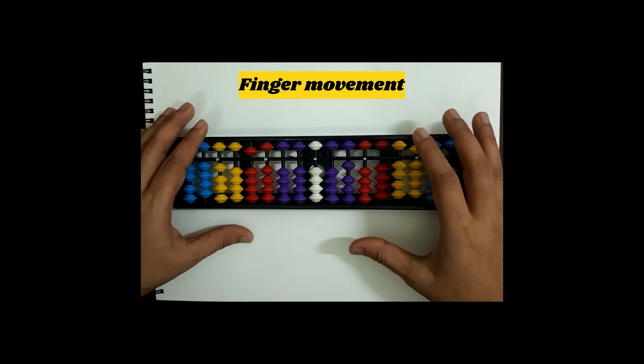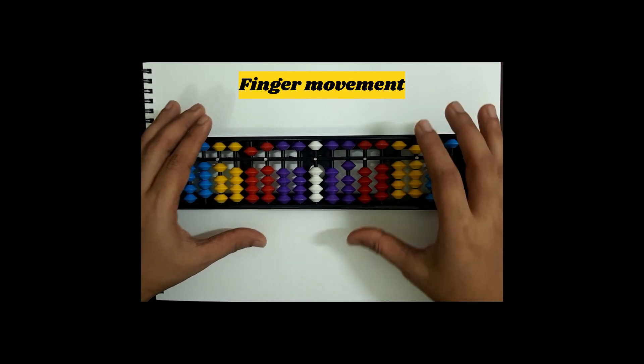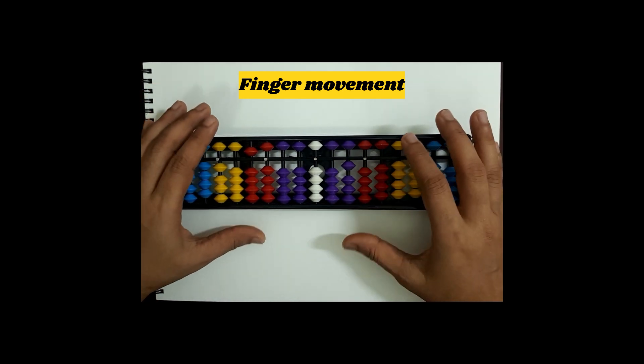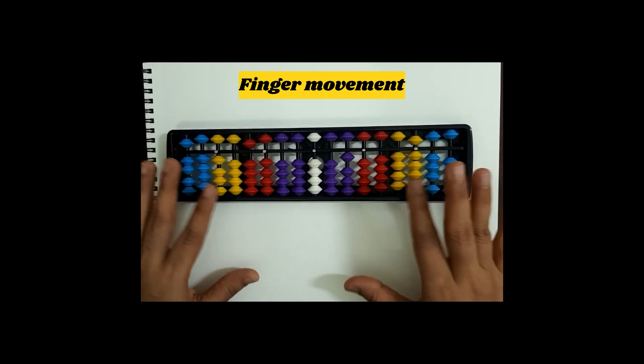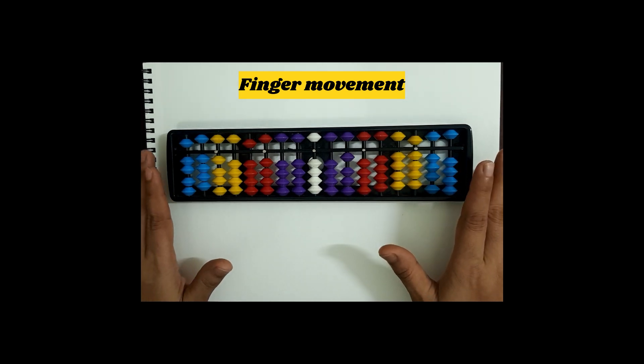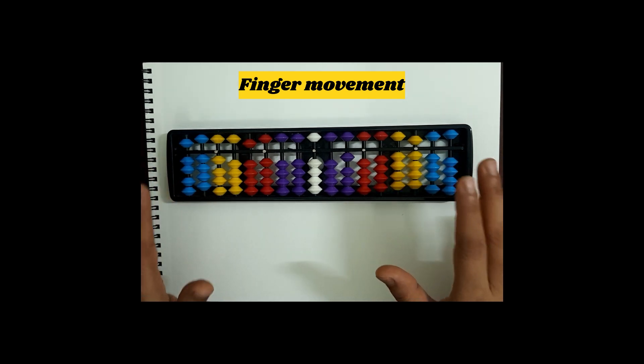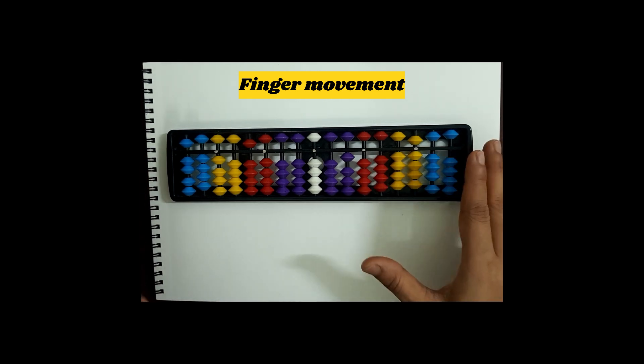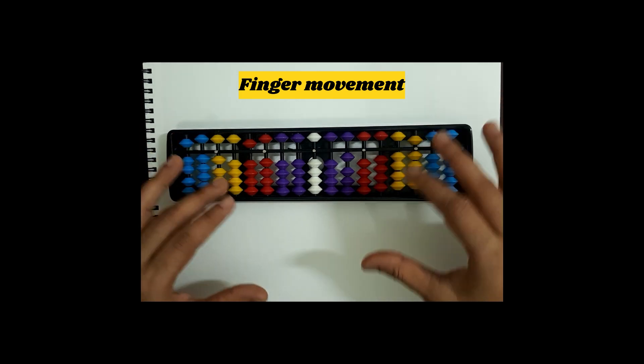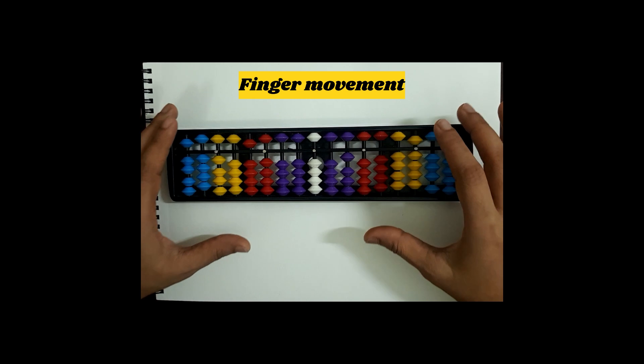Let us first know how to do finger movement for one rod. For doing it, keep the Abacus tool in front of you. You do not need to touch the Abacus tool, just look at it. While looking at your Abacus tool, you have to imagine or pretend that you are moving the beads from 1 to 9.